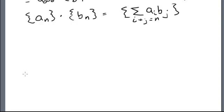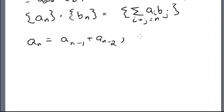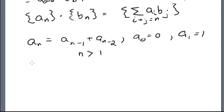The reason I'm studying generating functions is to solve recurrence relations. A typical recurrence relation looks like: a sub n equals a sub n minus 1 plus a sub n minus 2, where a₀ equals 0 and a₁ equals 1, with n greater than 1. If n equals 1, we'd get a negative subscript, which isn't allowed.